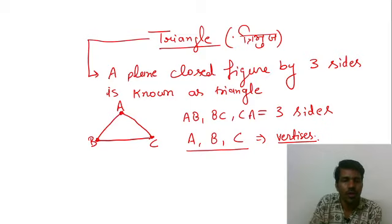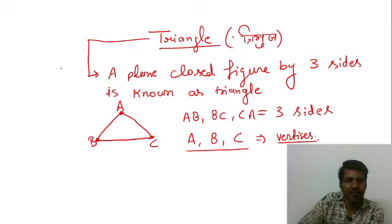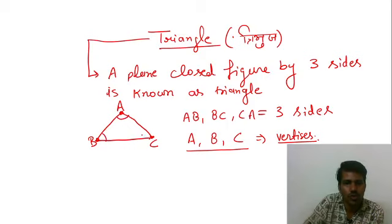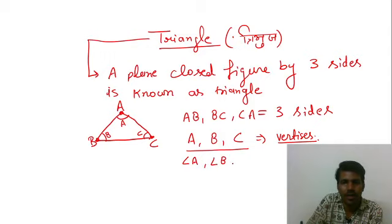And we have three angles, one, two, three. This angle is known as A, this angle is known as B, this angle is known as C. Angle A, angle B, angle C. A triangle has three angles.